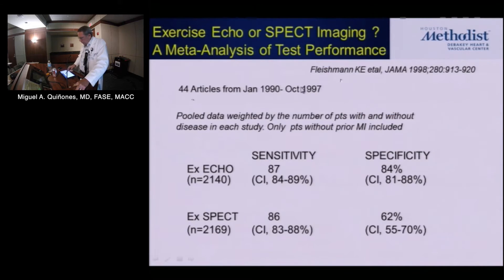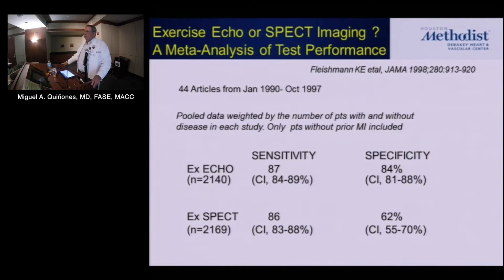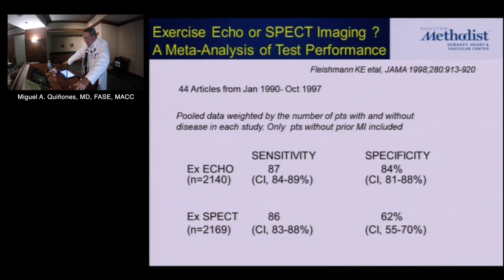Another important paper that has been referred to many times was a meta-analysis including something like 3,500 patients. It showed that stress echo and nuclear came out very well in sensitivity. But specificity was superior in the echo world compared to nuclear. However, this was academic laboratories with expertise in both. When you take stress echo to the street, the specificity drops. At the level of community practices, probably both share a specificity in the 60s — that's the reality we see frequently when patients are referred to us.